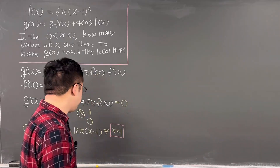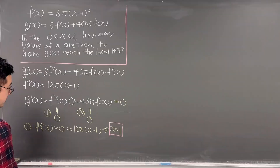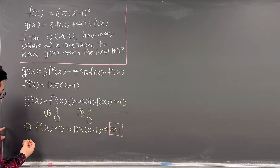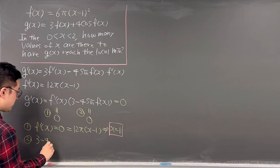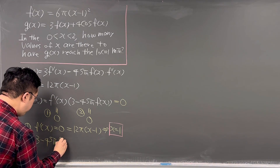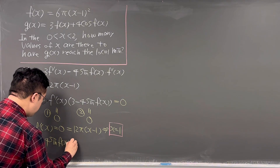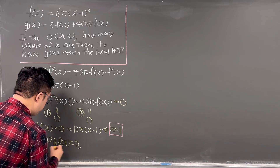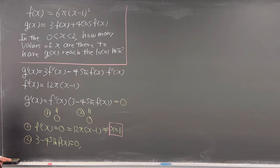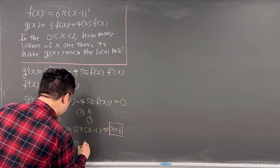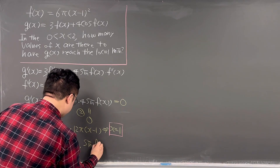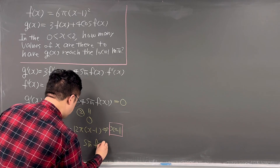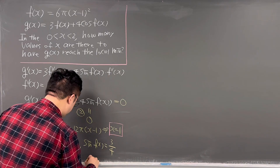Case 2: the parenthesis equals zero, meaning 3 − 4·sin(f(x)) = 0. This happens when sin(f(x)) = 3/4.